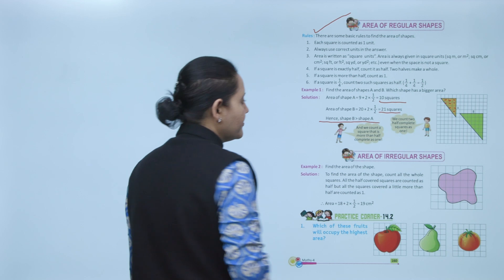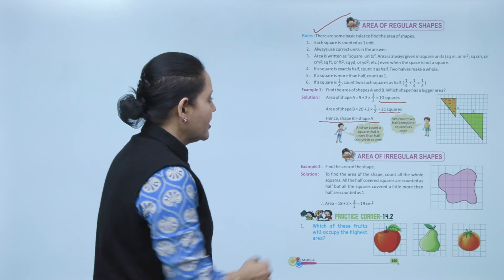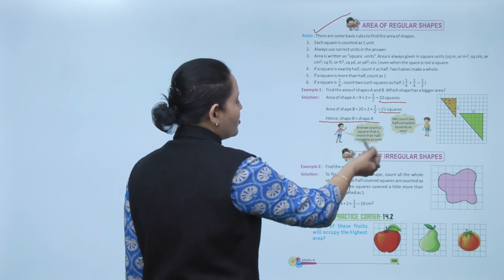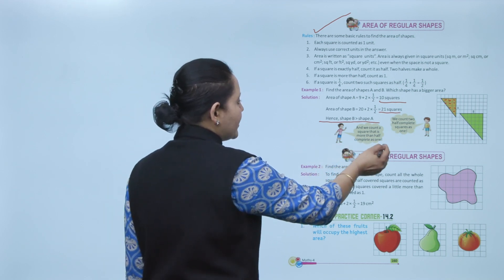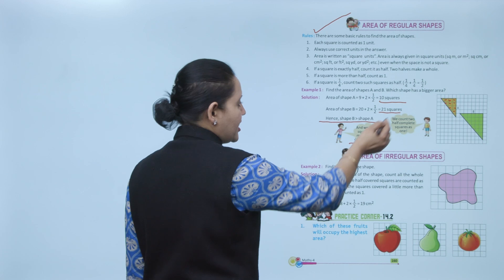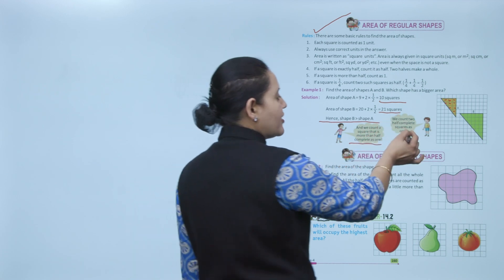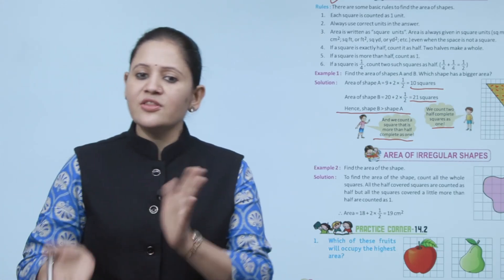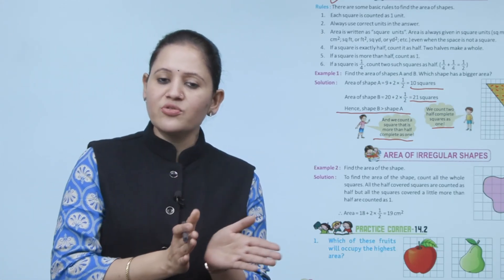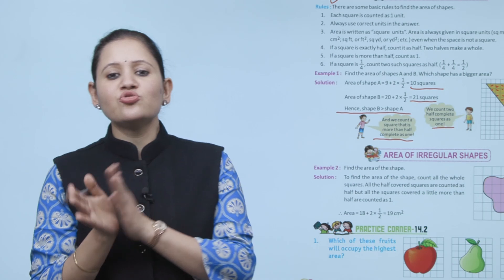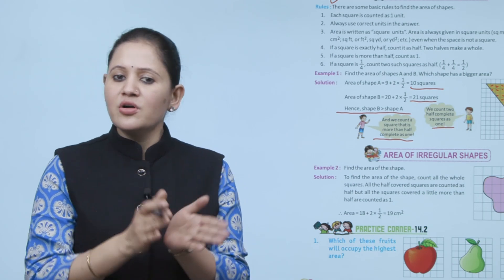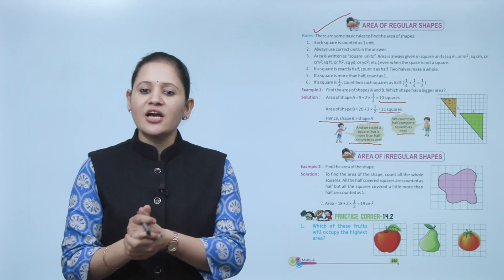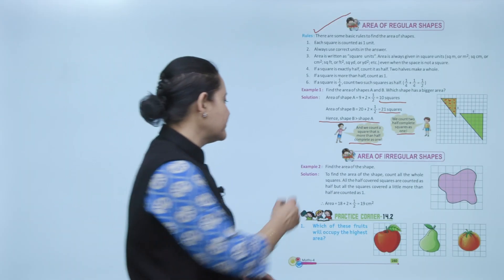To summarize: squares that are more than half complete are counted as 1. Two half-complete squares are counted as 1. Next is area of irregular shape.